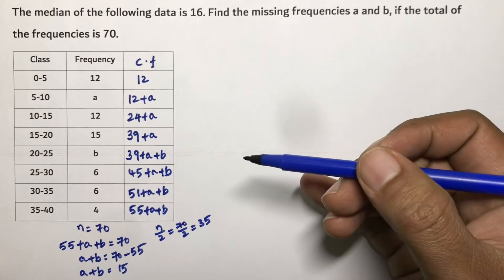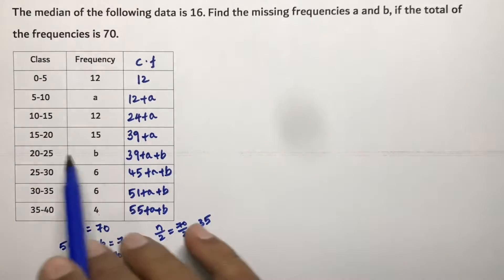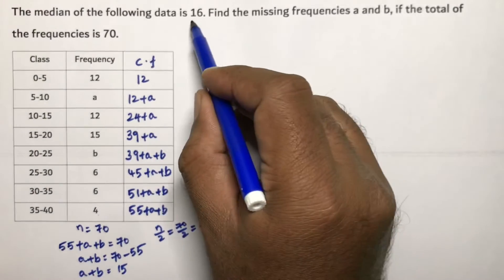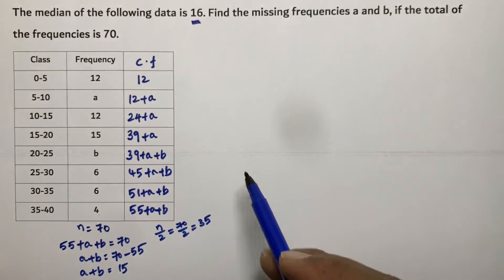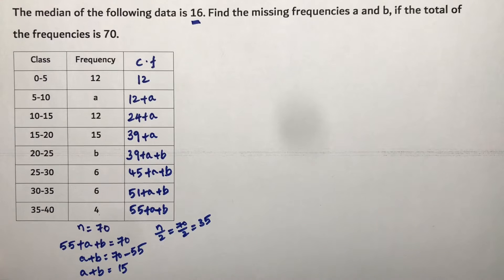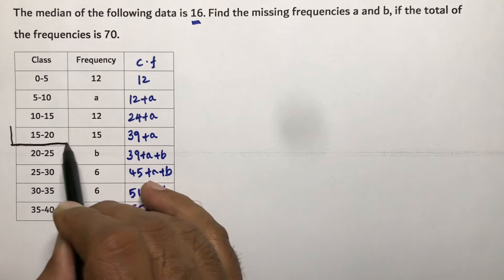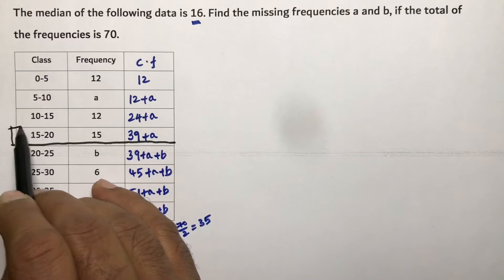35 we used to search in CF, but here we have missing frequencies. So in missing frequency problems we need to select the median class by seeing the answer. What is the answer here? 16. 16 you will get between 15 and 20. So the median class is 15 to 20. This is the median class.